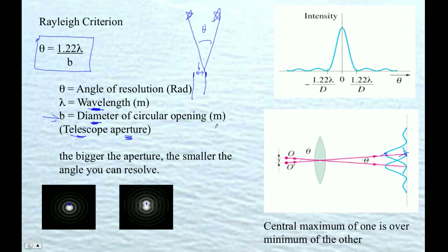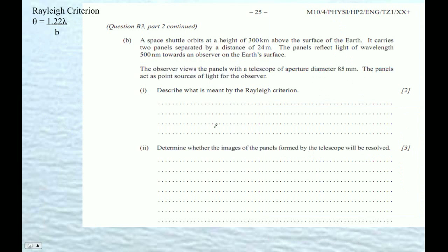So let's work through an example that showed up in the 2010 IB test. Space shuttle orbits at a height of 300 kilometers above the Earth. It carries two panels separated by 24 meters. If we draw a picture of this, here are these two panels. These are 300 kilometers. These things are, I'm exaggerating, there's two panels, panel A and panel B, and they are separated by 24 meters.